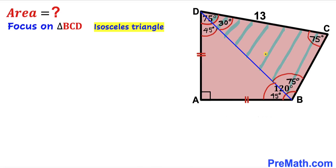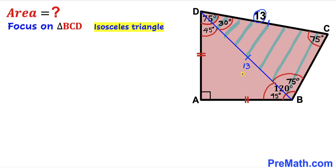Now let's focus on triangle BCD. We can see that this is an isosceles triangle as well, since this angle at C is 75 degrees and this angle at B in the triangle is also 75 degrees. So therefore side length CD is equal to side length BD. Since CD is 13, BD is going to be 13 units as well.